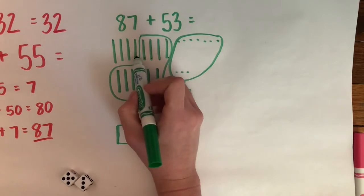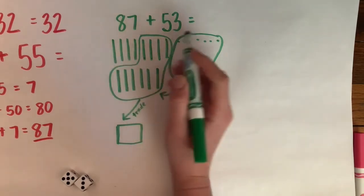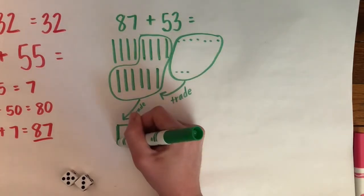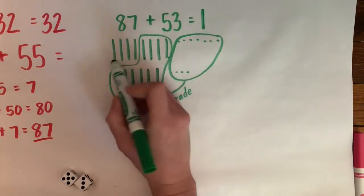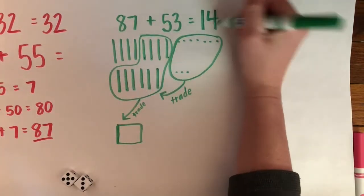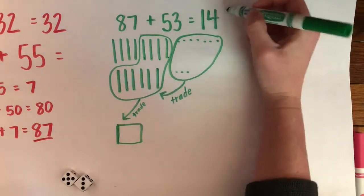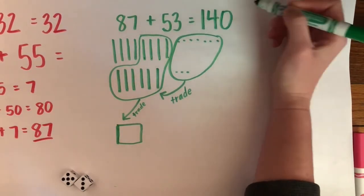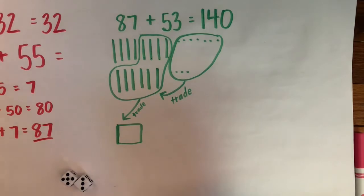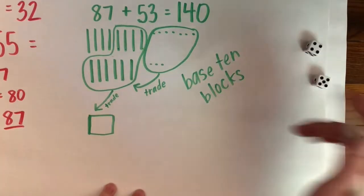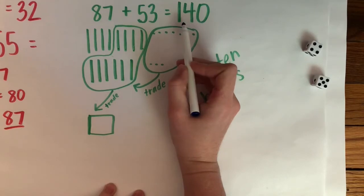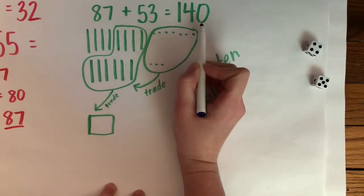Now let's count our tens first: 10, 20, 30, 40. So I have 4 tens. So I know that I have 1 hundred, I have 4 tens, and I have zero ones. So my answer using my base 10 blocks is 140.